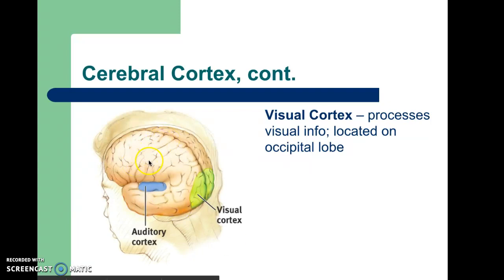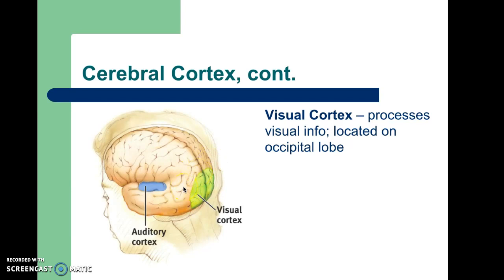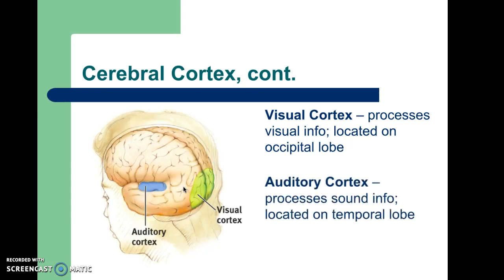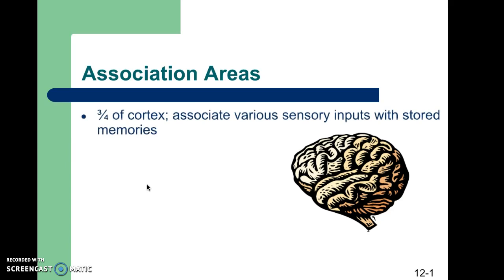The visual cortex is located on the occipital lobe and is involved in processing visual information — organizing shapes and, in secondary and tertiary areas, linking them with other sensory inputs. The auditory cortex is located on the temporal lobe and processes sound information: hearing music, interpreting loudness, pitch, and so on. There are two auditory cortices — one on each temporal lobe.